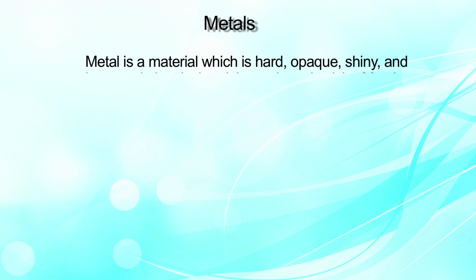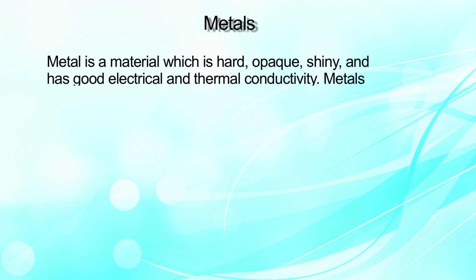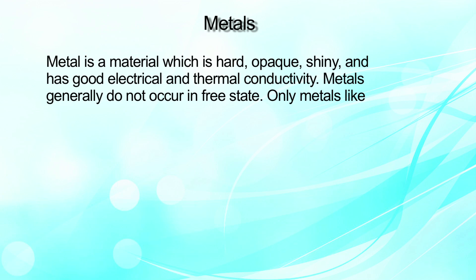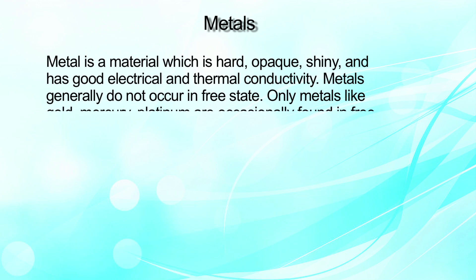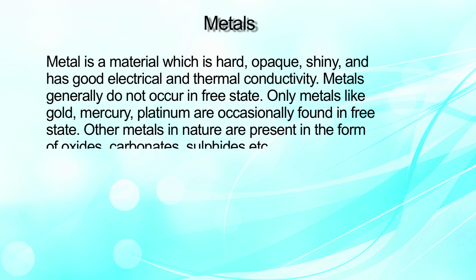Metals — a metal is a material which is hard, opaque, shiny and has good electrical and thermal conductivity. Metals generally do not occur in free state; only metals like gold, mercury, and platinum are occasionally found in free state. Other metals in nature are present in the form of either oxides, carbonates, sulphides, etc.